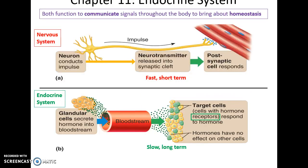The endocrine system is similar to the nervous system in that they both communicate signals throughout the body with the goal of maintaining homeostasis. However, the nervous system is super fast, utilizing neurons for short, quick responses. The endocrine system is super slow, sending out hormones into the bloodstream to affect receptors on their target cells. Only target cells with receptors will respond, so it's a slow, longer response.